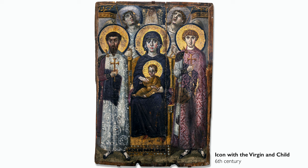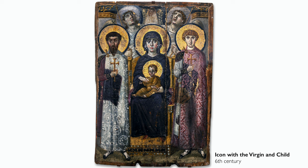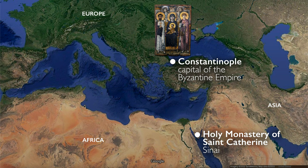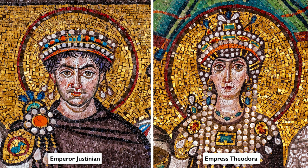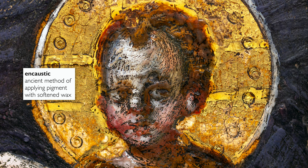These figures are not set back within an illusionistic space. We do have a hint of a niche, but the figures are very close to us — we are in their space, they are in our space, we are looking at one another. Art historians are fairly confident that this was made in Constantinople, and was probably the result of the patronage of the emperor — Justinian and Theodora — who we know are responsible for funding the construction of St. Catharines.